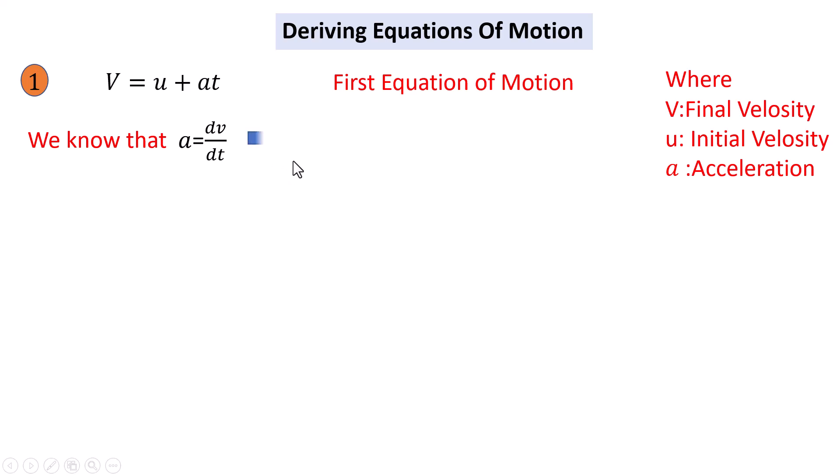Then we can write dv as a dt. If we integrate both sides, we get the integration from u to v of dv equal to a times the integration of dt from 0 to t. Integrating both sides, we get: